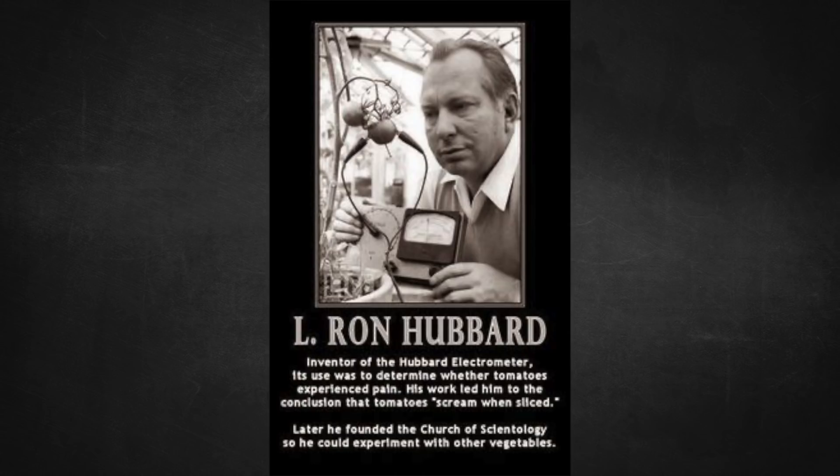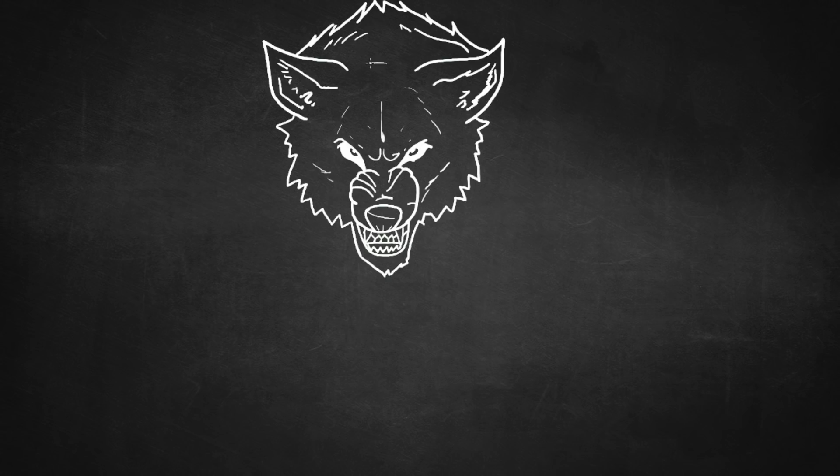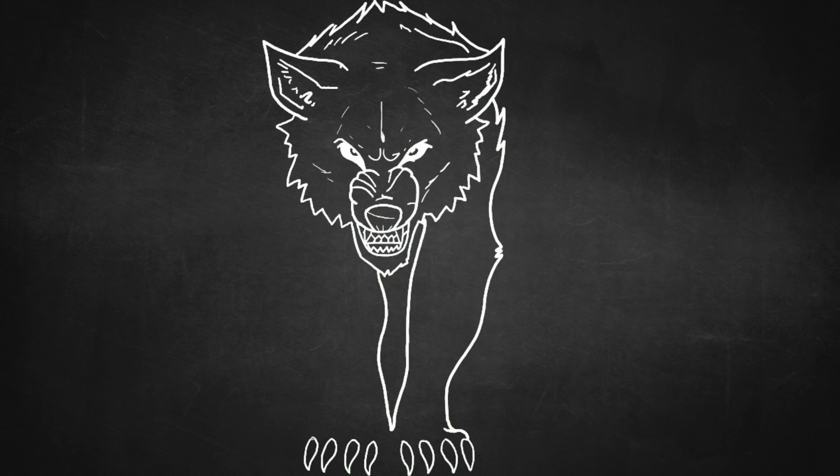Next. L. Ron Hubbard. Inventor of the Hubbard Electrometer. Its use was to determine whether tomatoes experienced pain. His work led him to the conclusion that tomatoes scream when sliced. Later, he founded the Church of Scientology so he could experiment with other vegetables. That is hilarious. But a few points of fact I want to get straight. One, he was the inventor of the Hubbard Electrometer, but the Hubbard Electrometer was just a galvanic skin resistance tester with a label that said Hubbard Electrometer slapped on the front. He didn't invent the actual device, the galvanic skin resistance tester. We've been experimenting with those since the late 1800s. It's one of the things a polygraph machine uses to determine if somebody is lying.